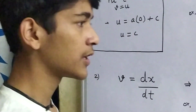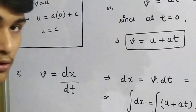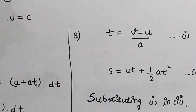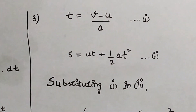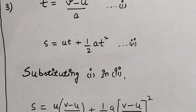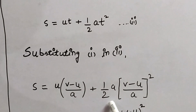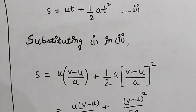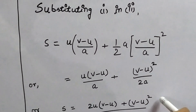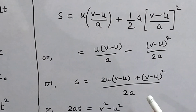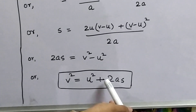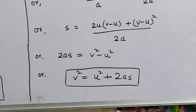Now, to derive the third equation, we will substitute the first equation into the second. From the first equation, we have T = (V − U)/A, and from the second, S = UT + ½AT². Substituting T from the first equation into the second, we get S = U(V − U)/A + ½A·((V − U)/A)². Simplifying, we get S = (2UV − 2U² + V² − 2UV + U²) / 2A, which gives 2AS = V² − U², or V² = U² + 2AS. In this way, the third equation is also derived.